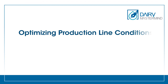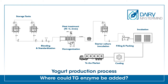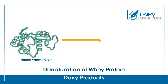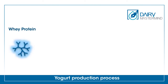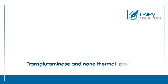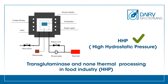Optimizing production line conditions — Where could TG enzyme be added? Depending on the process and production equipment, TG enzyme can be added in raw milk, in the mixing stage, or after heat treatment just before adding starter culture in inoculation tanks. All research and experience has shown that adding TG enzyme after heat treatment and just before adding starter culture in inoculation tanks gives the best result, because at this stage whey proteins are denatured, unfolded, and more accessible for TG — so a better texture is obtained. It is also good to know that using transglutaminase is compatible with modern food technologies like HHP, and it can have a positive effect.